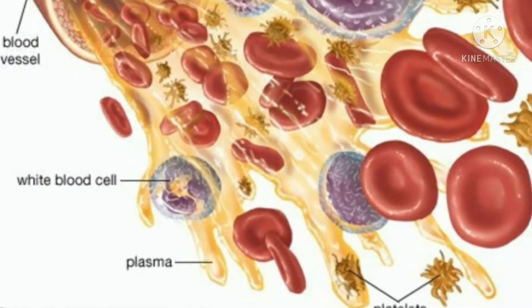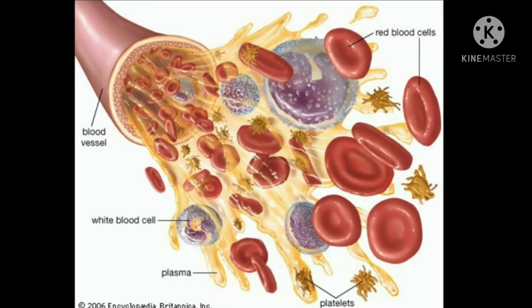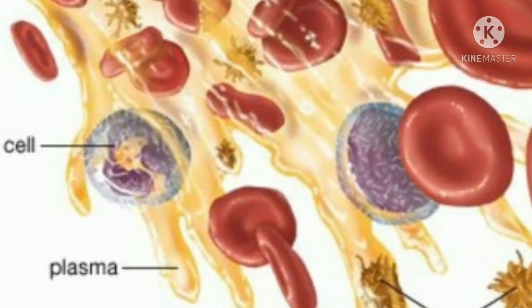Plasma is the liquid component of blood in which the red blood cells, white blood cells, and platelets are suspended. Plasma is mainly made from water and also contains many different proteins and other chemicals such as hormones, antibodies, and enzymes.